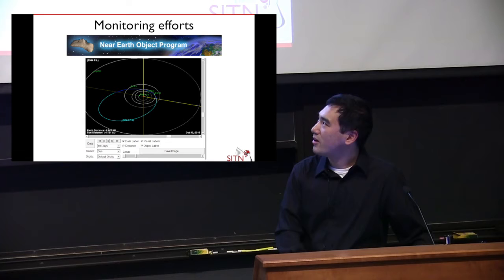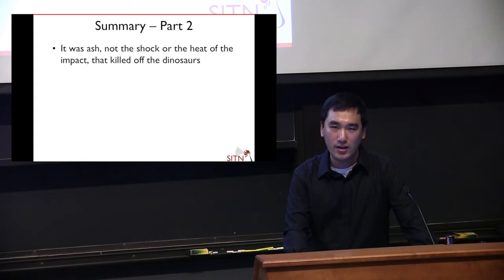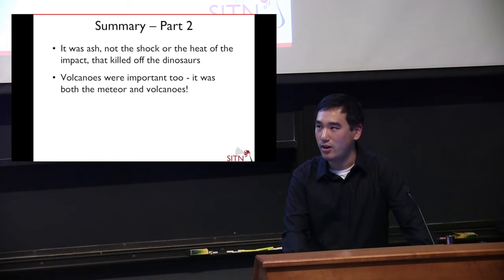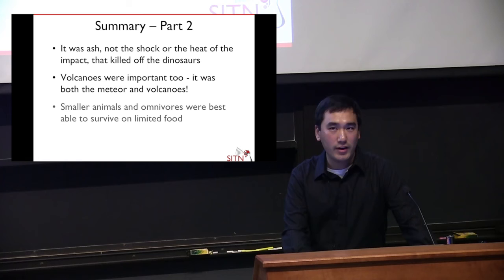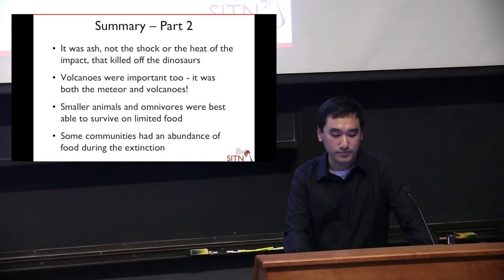To summarize this part of the talk: it wasn't really the shockwave of the meteor impact, or the earthquakes and tidal waves, that killed off the dinosaurs — it was the ash causing mass starvation. We actually think it was both volcanoes and the asteroid impact together that killed off the dinosaurs, combining to block out sunlight, kill off the plants, and then kill off the dinosaurs by extension. Animals better able to survive were smaller animals requiring less food per individual, and omnivores able to make use of more diverse food sources. Some communities actually had an abundance of food and thrived during the extinction.